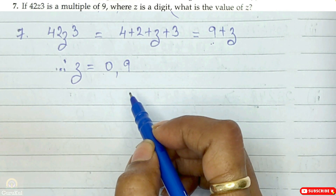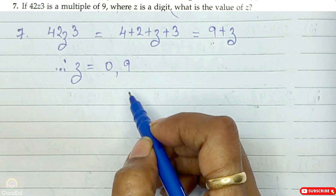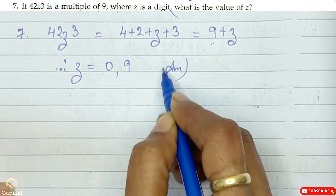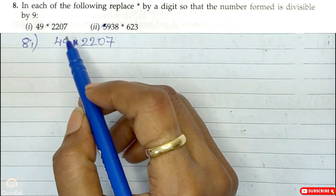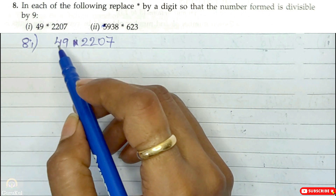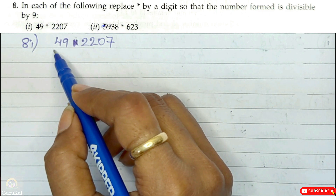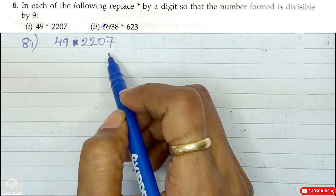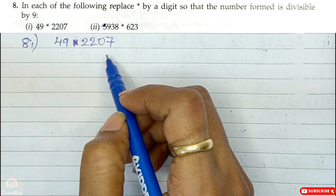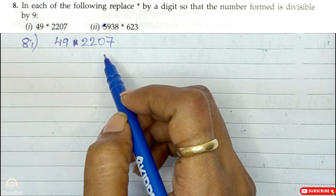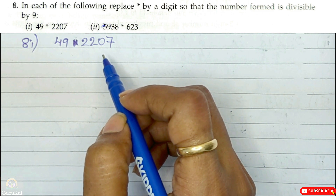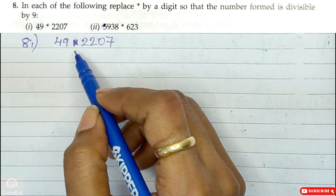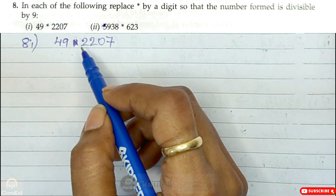So those are the only two values — the actual value of Z is 0 or 9. Now question number 8, part 1. The number given is 49*2207, and this number formed is divisible by 9. Hence we need to find the value of star.